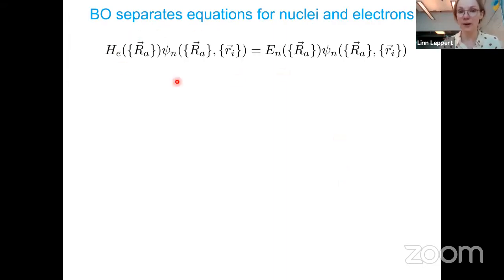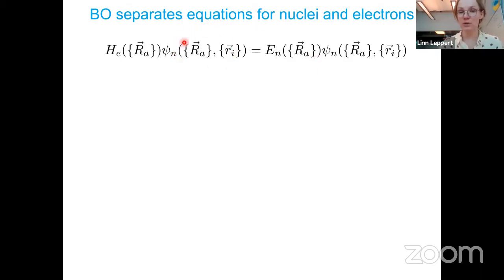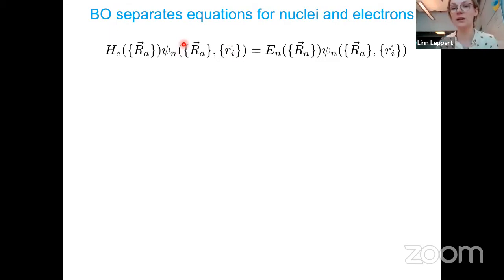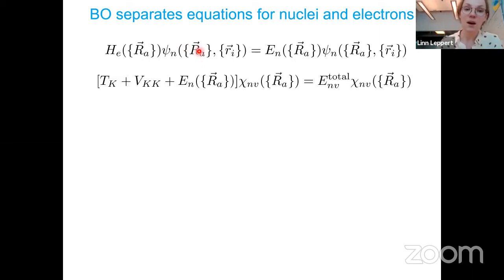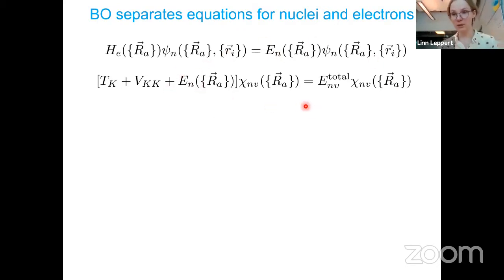This allows me to separate the equations for these two wave functions. I first get a Schrödinger equation for the electronic problem, where the nuclear positions are present because they determine the potential that the electrons feel, but they are only parameters — we assume them to be static in this equation. We solve this, get energies and wave functions, and then plug those into the nuclear equation and solve that separately.